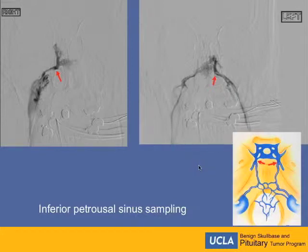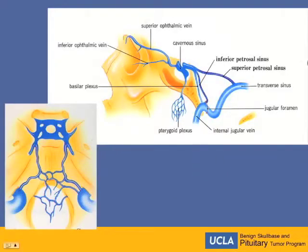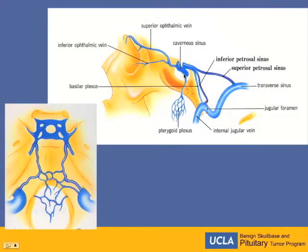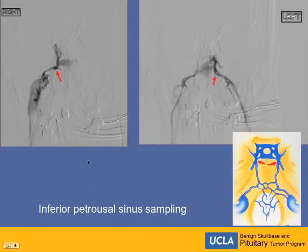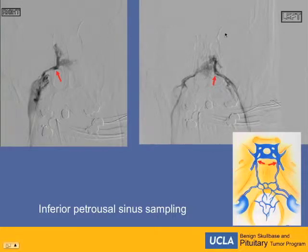This shows the inferior petrosal sinus sampling. An important consideration is the anatomy of the inferior petrosal sinus. Here is the internal jugular vein and the transverse sinus. The inferior petrosal sinus runs from the internal jugular vein into the cavernous sinus. This is the corresponding picture in an AP view. The tip of the catheter has to be positioned close enough to the cavernous sinus. In this patient's petrosal sinus sampling, the catheter went very close to the cavernous sinus, making this a technically very reliable catheter position.